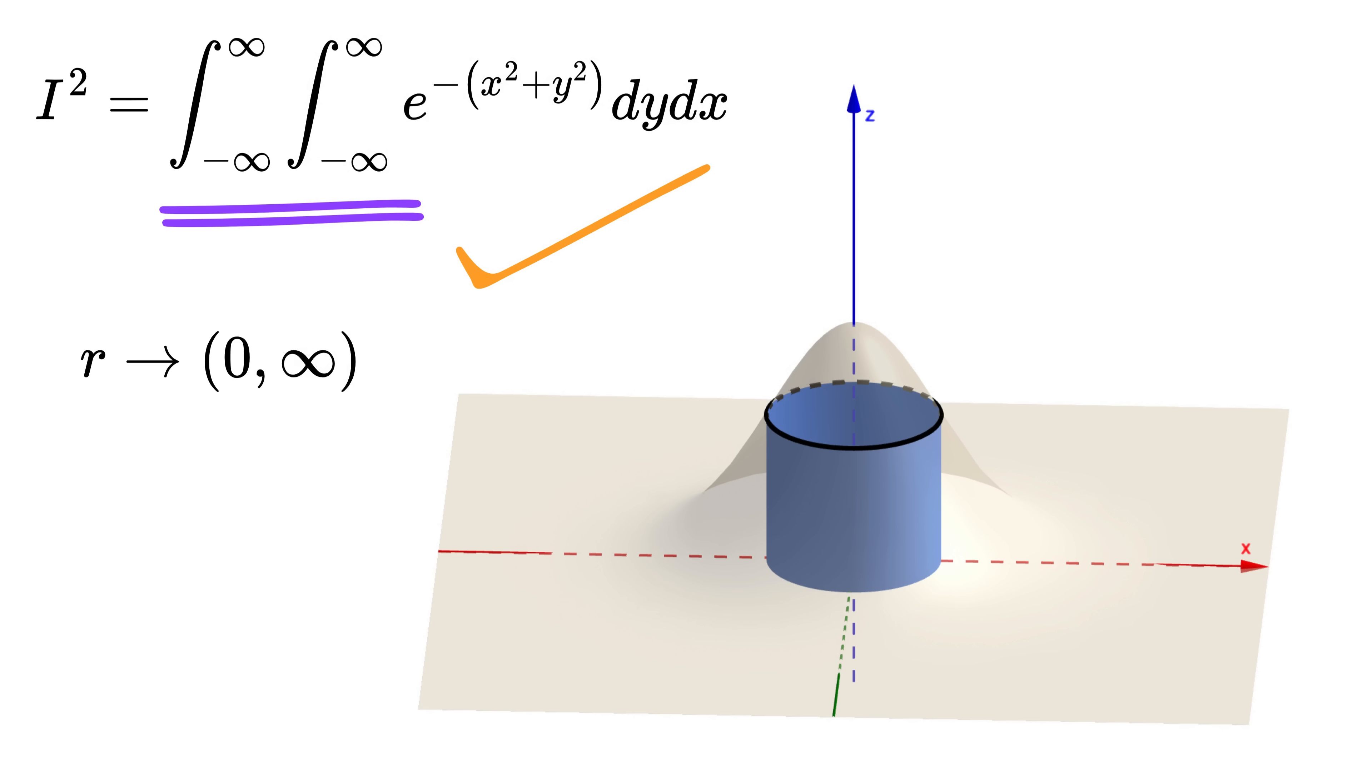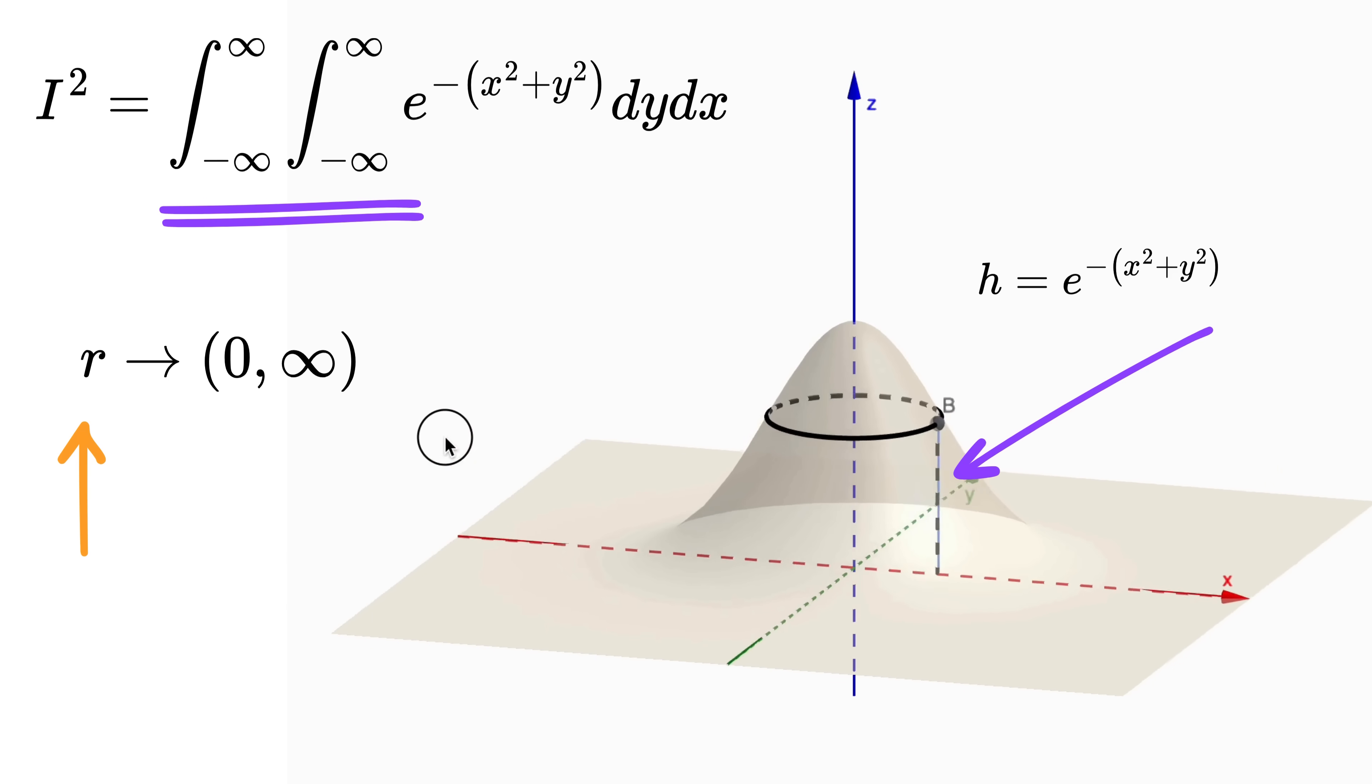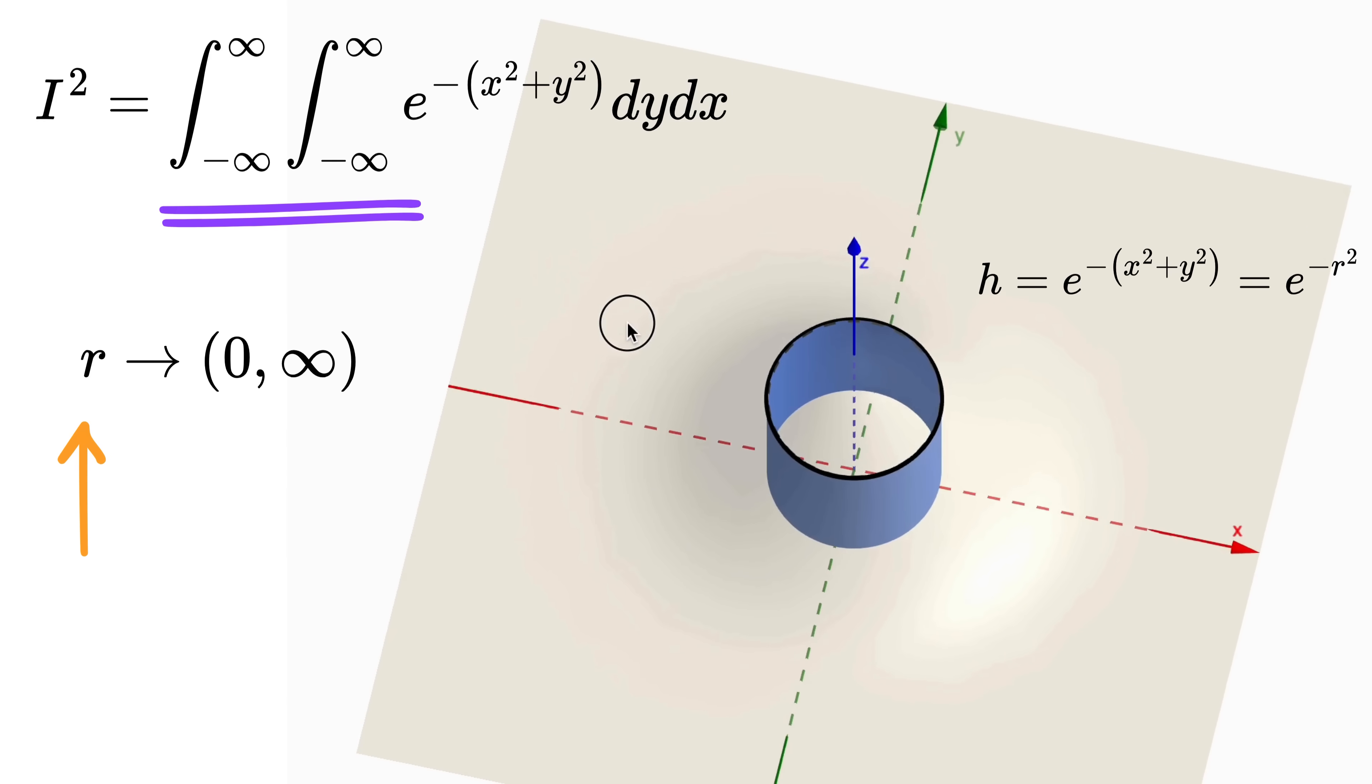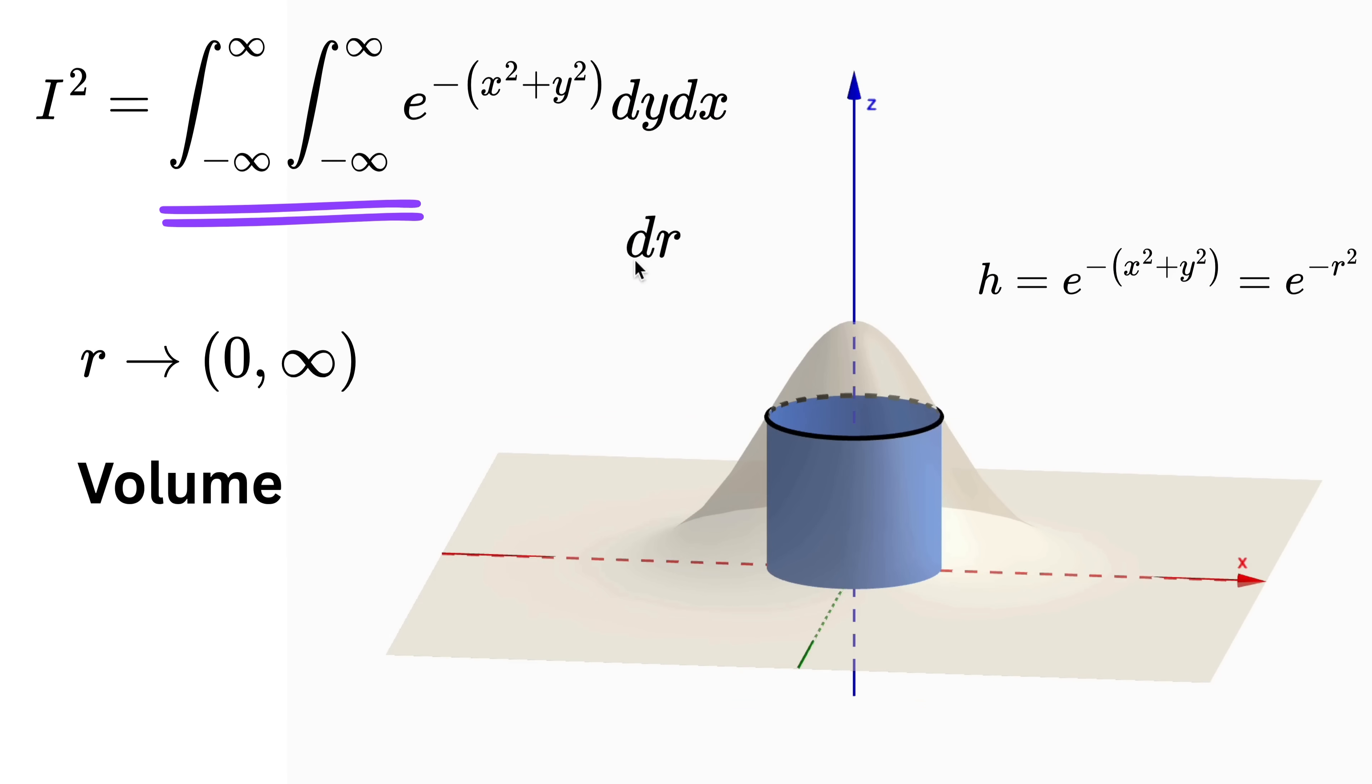To do that, focus on this one cylindrical shell whose radius is this r, then this is the height h, which will be e raised to minus x squared plus y squared. As you can see that any point on this graph at this radius r has a value of this function. So we can also write h as e raised to minus r squared, because of this circle equation. And then, its thickness will be this little part, which will be dr, because walls of tube is supposed to be infinitesimally thin.